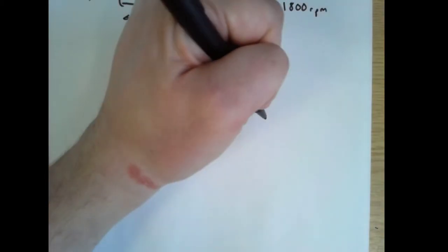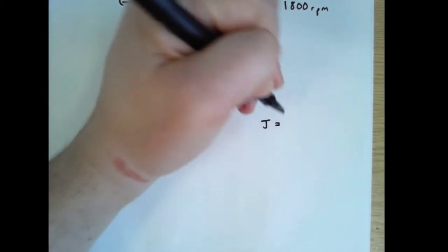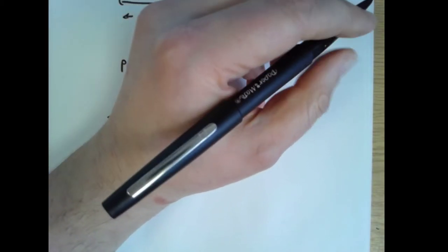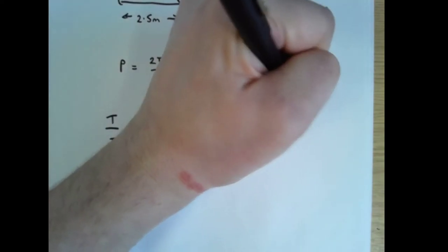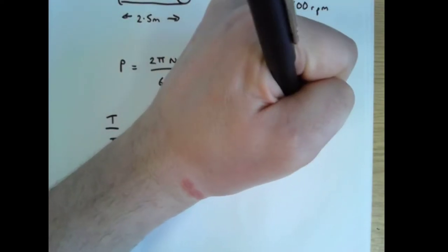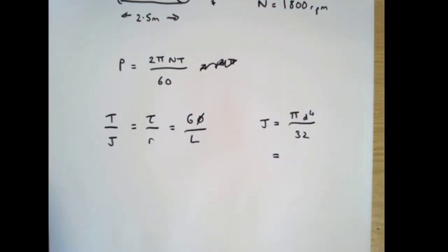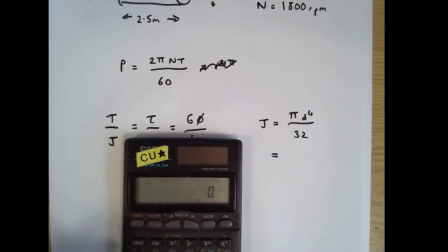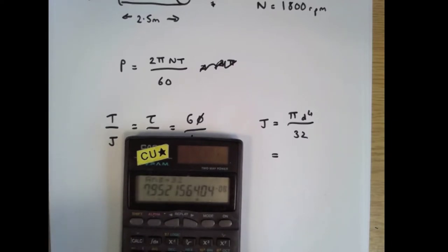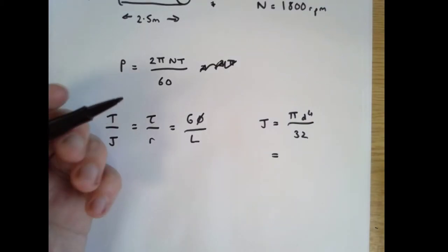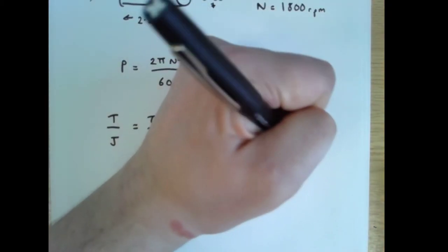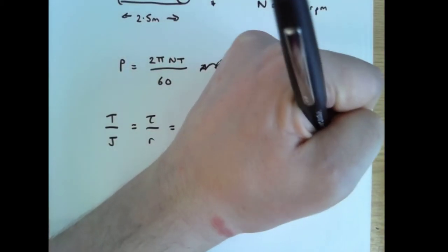First of all let's calculate j. It's given in the formula sheet, it's pi d to the 4 over 32, and that equals 0.03 to the 4 times pi divided by 32, which is 7.95 times 10 to the minus 8 meters to the 4.